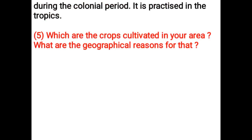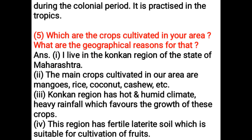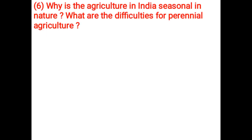Which crops are cultivated in your area and what are the geographical reasons? I live in the Konkan region of Maharashtra. The main crops cultivated in our area are mangoes, rice, coconut, and cashew. The Konkan region has hot and humid climate with heavy rainfall, which favors the growth of these crops. This region has fertile laterite soil suitable for cultivation of fruits.